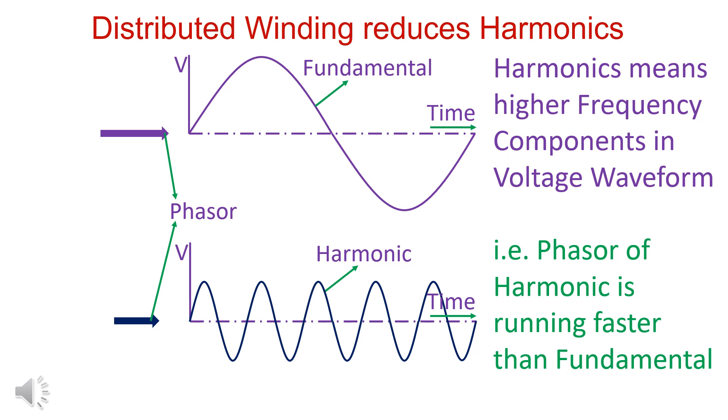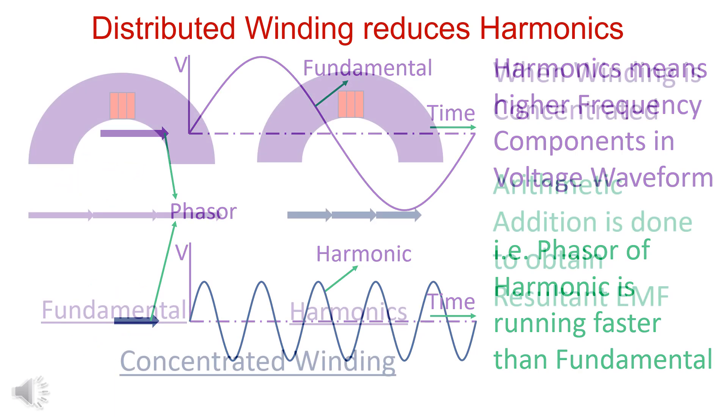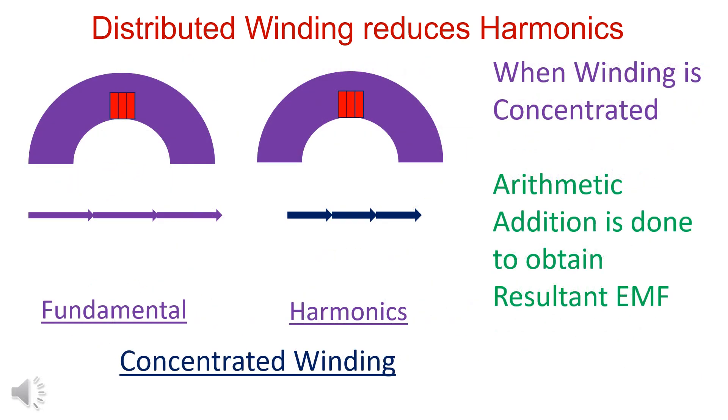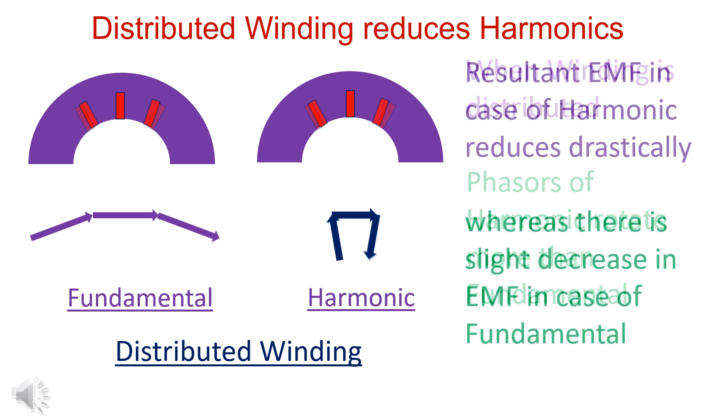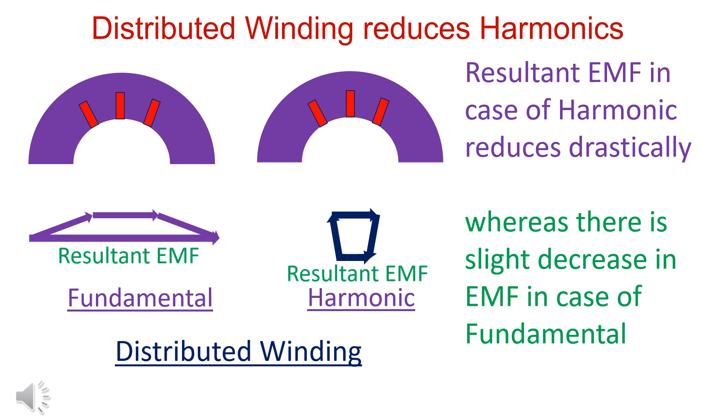Distributed winding decreases or increases harmonics. Harmonics means higher frequency components, that is, stator harmonic is running faster than the fundamental. In case of concentrated winding, arithmetic addition is done to obtain resultant EMF. In case of distributed winding, phases of harmonics rotate faster. Resultant EMF in case of harmonics reduces drastically.